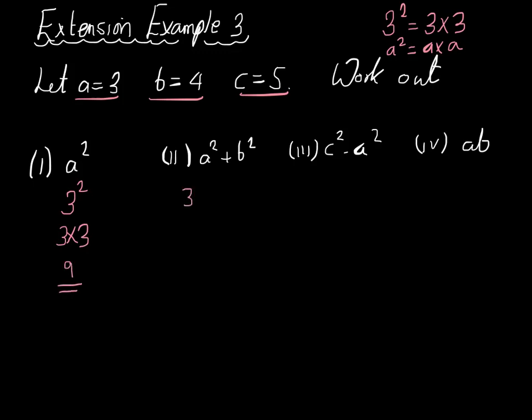a squared plus b squared, that means 3 squared plus 4 squared. 3 times 3 is equal to 9, plus 4 times 4 is equal to 16. You add those together and you get 25. The next example, c squared subtract a squared. So c squared would be 5 squared, subtract a squared would be 3 squared. 5 squared is 25, take away 3 squared is 9. So 25 take away 9 is equal to 16.